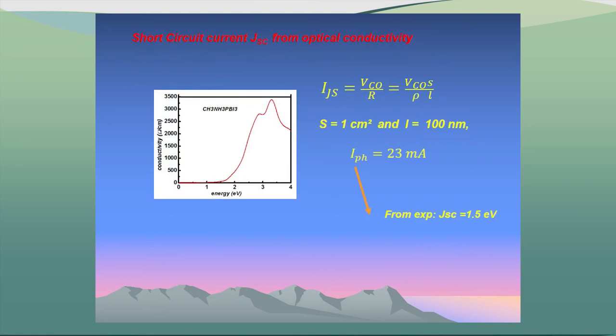The photo current, calculated also from the conductivity that I presented today — when I use this formula and give one example where the cross-section is about 1 cm² and the length is about 100 nm — I find 22 mA, which is very close to the experimental value shown this morning.